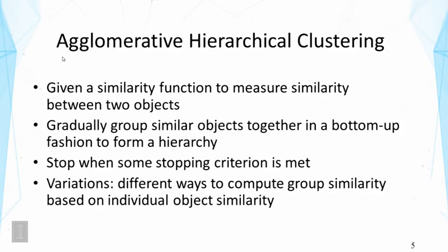Let's look at agglomerative hierarchical clustering. We are given a similarity function to measure similarity between two objects, and then we can gradually group similar objects together in a bottom-up fashion to form larger and larger groups, forming a hierarchy. We stop when some stopping criterion is met — either some number of clusters has been achieved or a similarity threshold has been reached. Different variations mainly differ in the ways to compute group similarity based on individual object similarity.